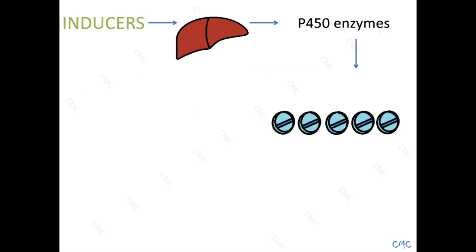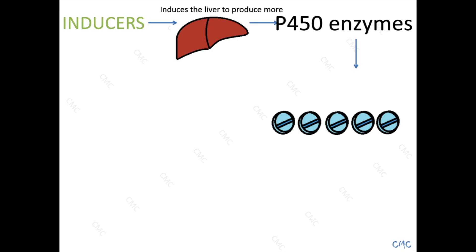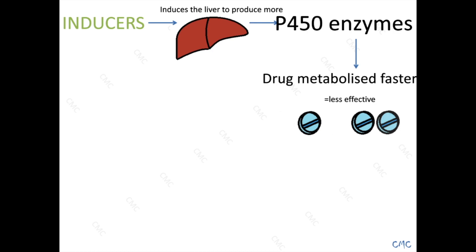Here we are with the first set of medications that affect liver enzymes: the infamous inducers. Inducers induce the liver to produce more cytochrome P450 enzymes. More enzymes means more breakdown of the drug that you're putting in. And hence, the drug you put in is consumed a lot faster and is thus less active. In other words, inducers deem the medications you put in a bit crap — they reduce their efficacy.